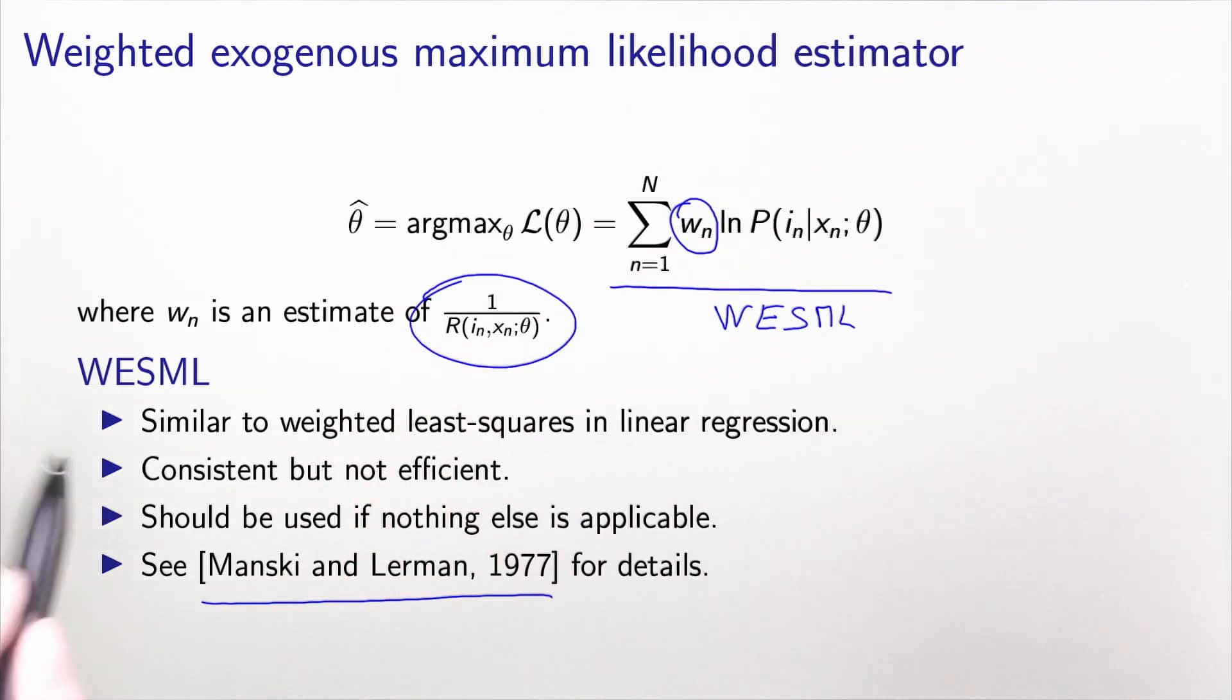To some extent, this is very similar to the weighted least squares in linear regression. This estimator is shown to be consistent, meaning asymptotically unbiased, but is not efficient. It should be used only if nothing else is applicable.